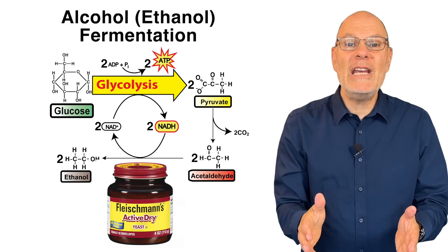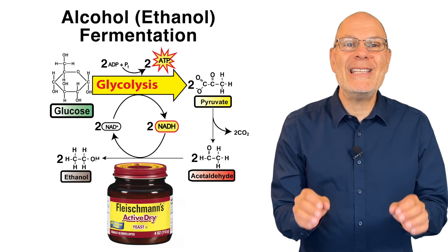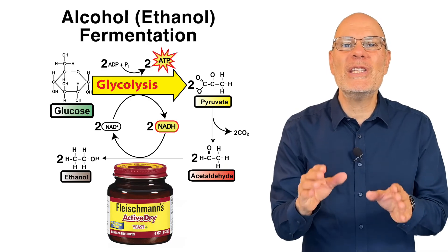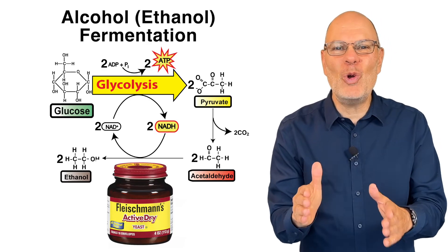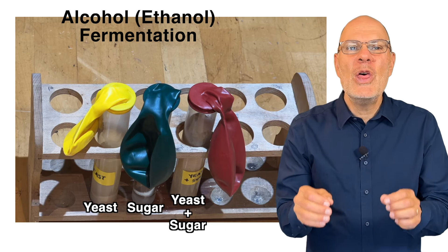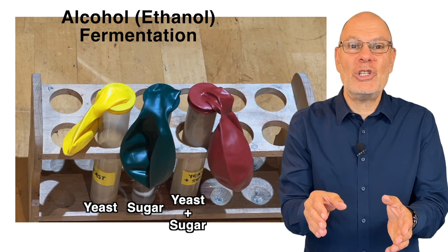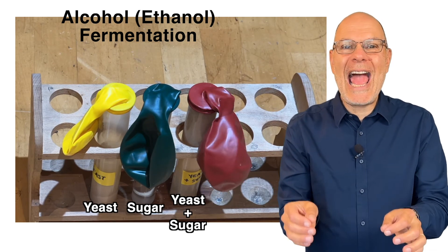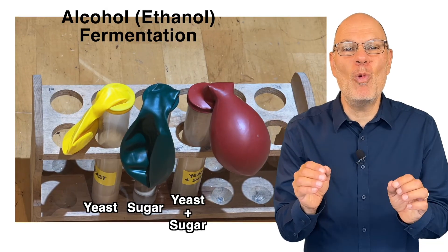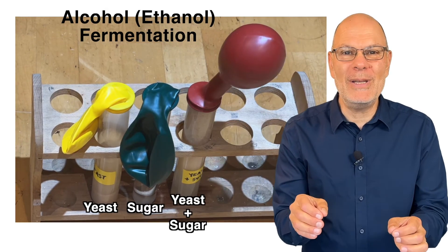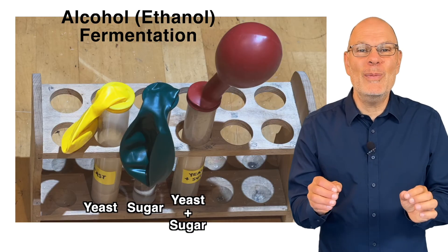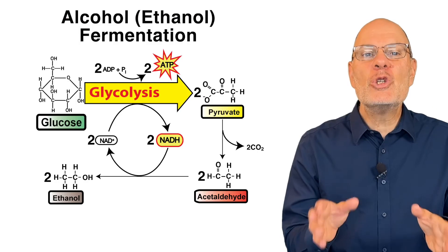The second type of fermentation to know about is alcohol fermentation. It's performed by yeast, and we can observe this with a simple, controlled experiment. I have three test tubes: the first has yeast, the second has sugar, and the third has yeast and sugar. I add water to all three, and watch what happens. What you've observed in the third test tube is alcohol fermentation.